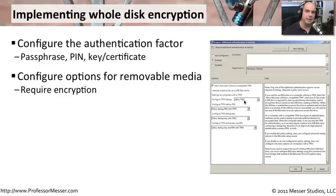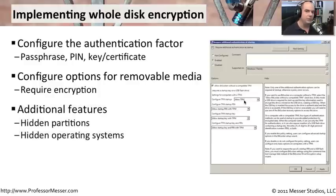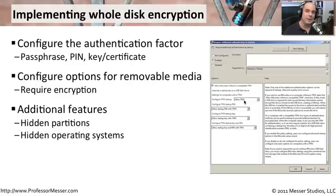If you remove that USB drive, go somewhere, drop it, or lose it, it's OK — all of the information on it is completely encrypted. Additional features may also be available. For example, TrueCrypt allows you to build hidden partitions and hidden operating systems. You can start your computer and it looks like a normal Windows desktop, but if you start it in a certain way, you can access the hidden operating system. That's a very effective way to keep things safe using full disk encryption.